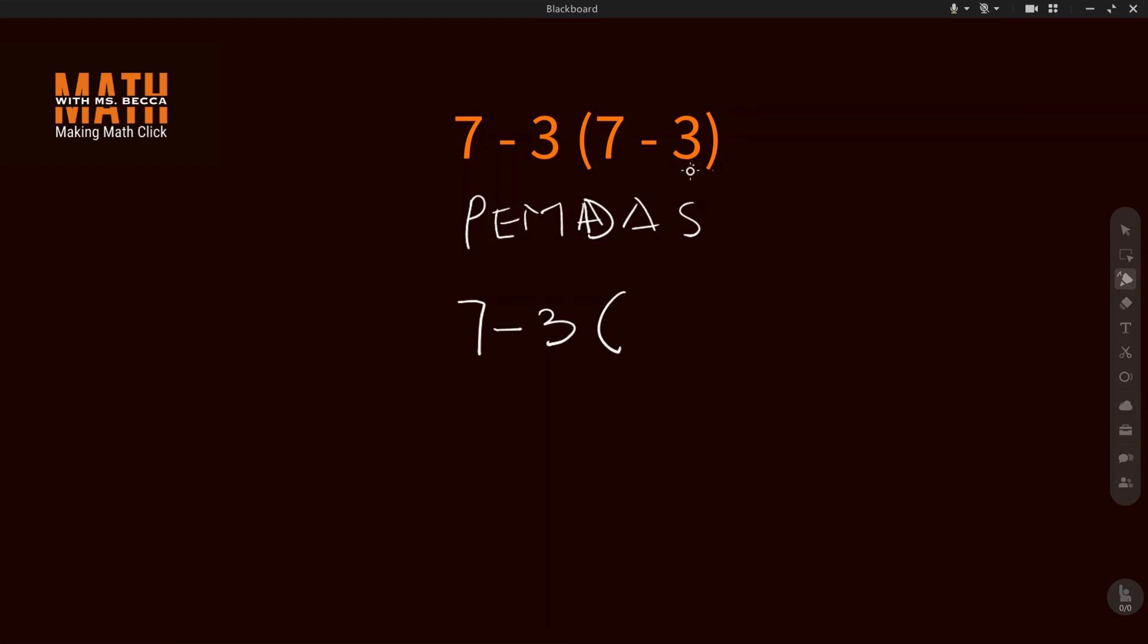So that means we'll be having 7 minus 3. In this bracket we have 7 minus 3. 7 minus 3 will give 4, so that means we'll be having 7 minus 3 times 4.